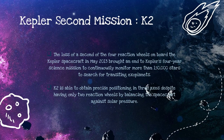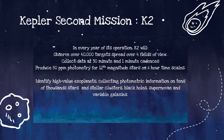Finally, the Kepler second mission, known as K2. K2 uses the spacecraft built and launched for the original Kepler mission, which ended data collection in 2013. K2 is able to obtain precise positioning in three axes despite having only two reaction wheels, by balancing the spacecraft against solar pressure. In each year of operation, K2 observed over 40,000 targets spread over four fields of view, covering both the northern and southern sky — in and out of the plane of the galaxy — and covered 10 times more sky than the original Kepler mission. K2 identified high-value exoplanets for follow-up and characterization, collecting photometric information on tens of thousands of stars and gathering information on stellar clusters, black holes, supernovae, and variable galaxies.